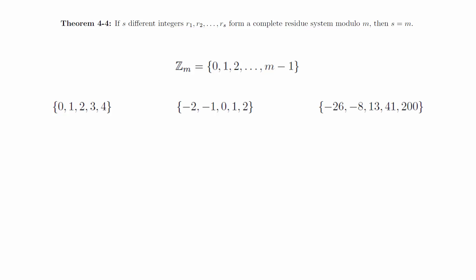We can also be less restrained with our substitutions and have the set negative 26, negative 8, 13, 41, and 200 as a complete residue system. The important fact is that every element corresponds to exactly one element in z sub 5.